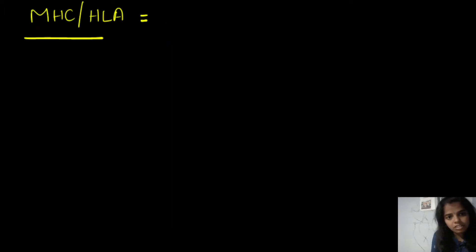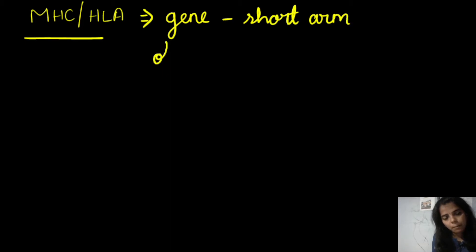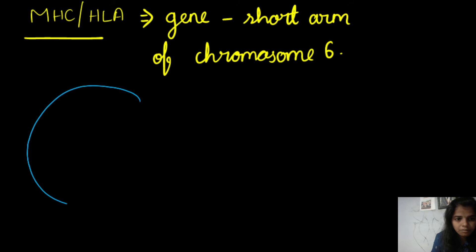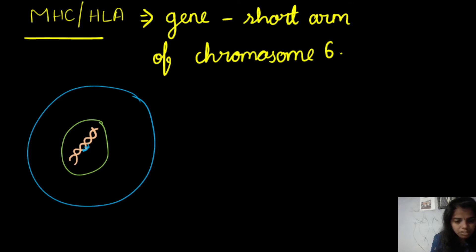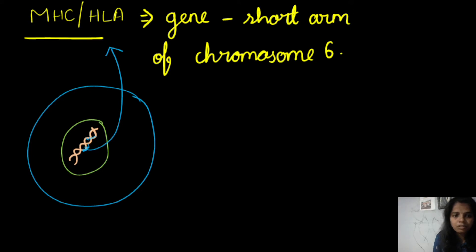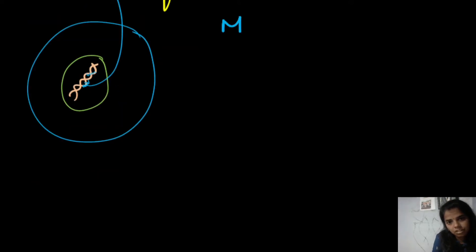MHC or HLA is nothing but a group of genes located in the short arm of chromosome 6. Inside the human cell we have a nucleus, and inside the nucleus we have our DNA. In the DNA, we have a group of genes located on chromosome 6, which is called Major Histocompatibility Complex or Human Leukocyte Antigen.